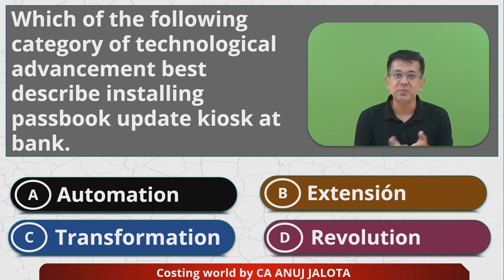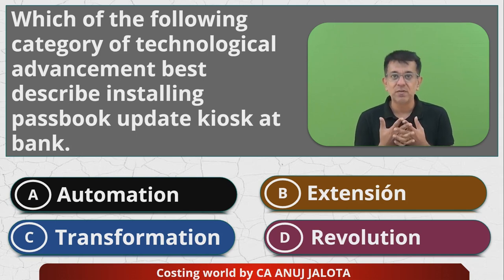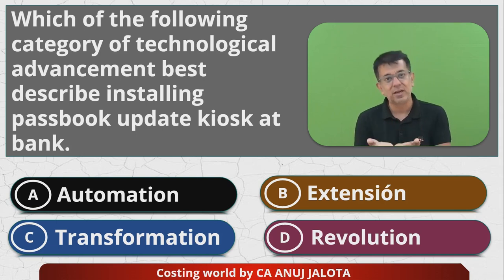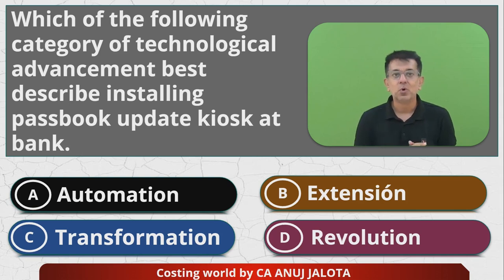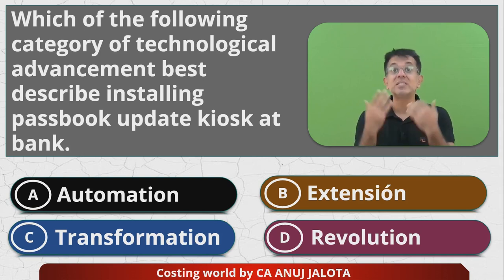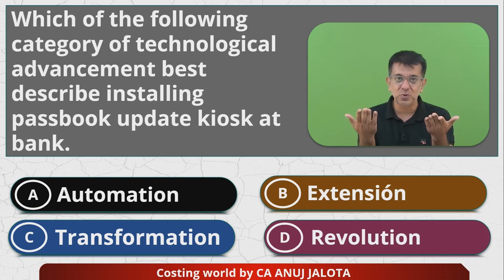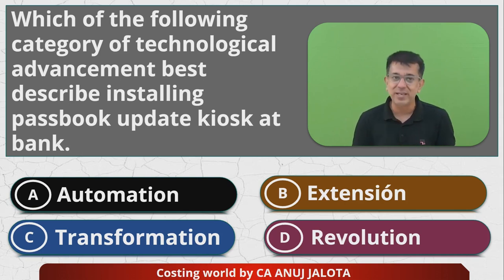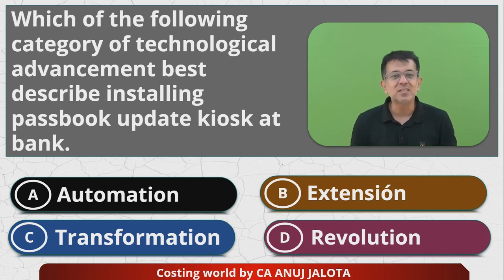From the 1990s till today, everything we do is basically based on the internet. One day cars will also be self-driven, based on 5G and 6G technology. All your banking is based on the internet; you're watching these videos through the internet. That change in how we completely live — that is revolution.